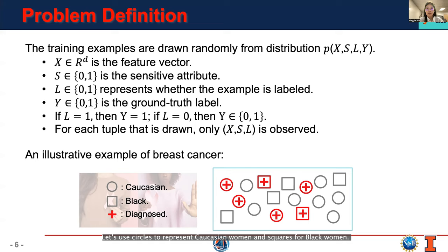We use the previously mentioned example of breast cancer as an illustration. Let's use circles to represent Caucasian women and squares for Black women. A red cross means that the example is diagnosed with cancer. In a PUL dataset, we only have examples who have already been diagnosed with cancer and the unlabeled ones who might have the cancer or might be healthy.